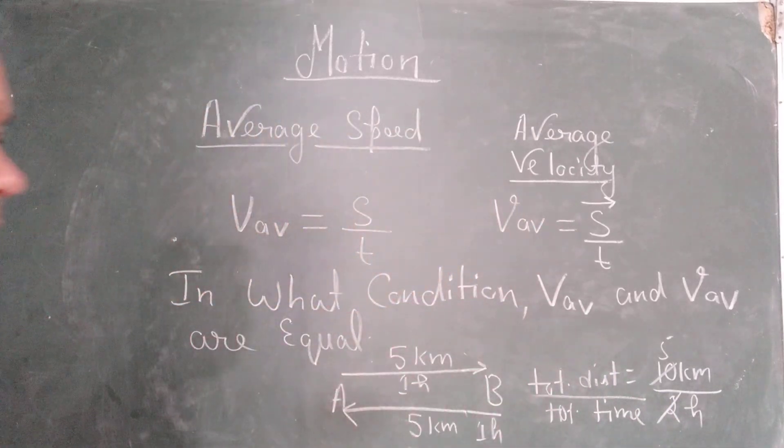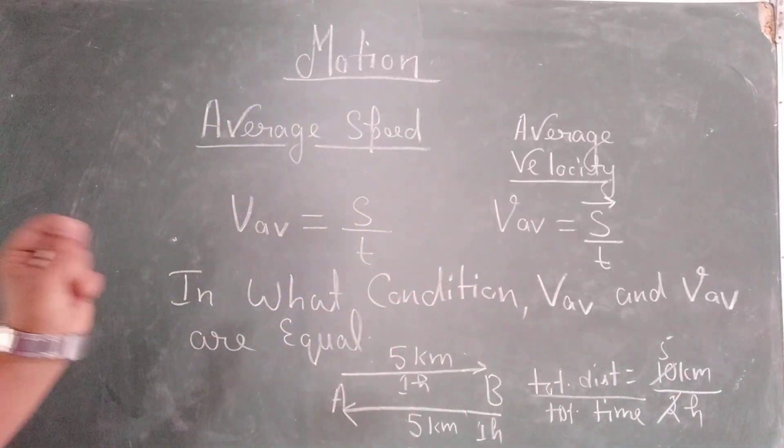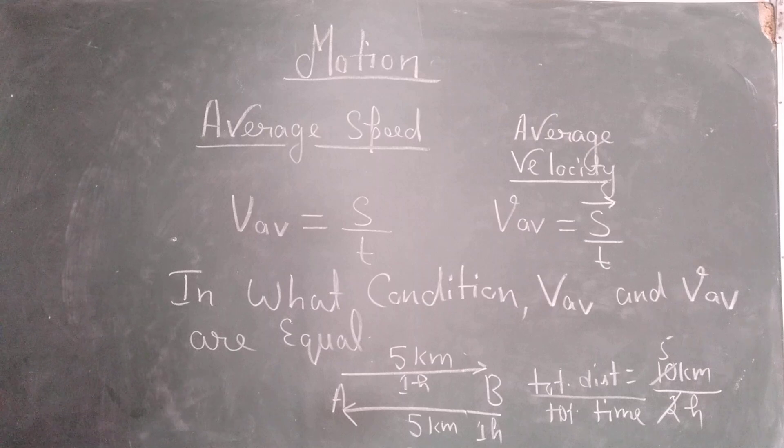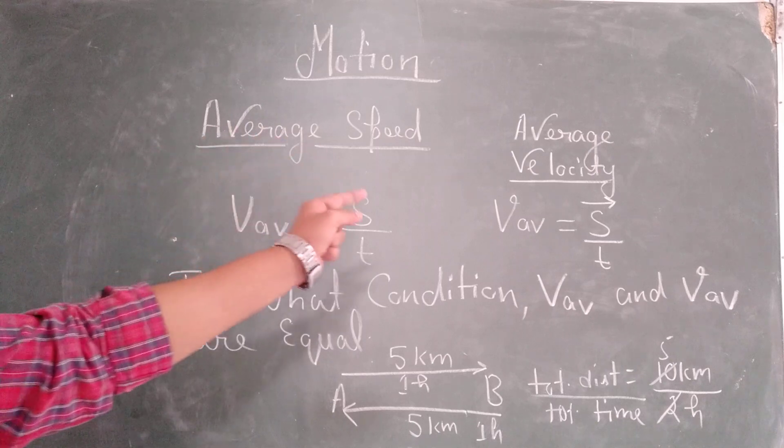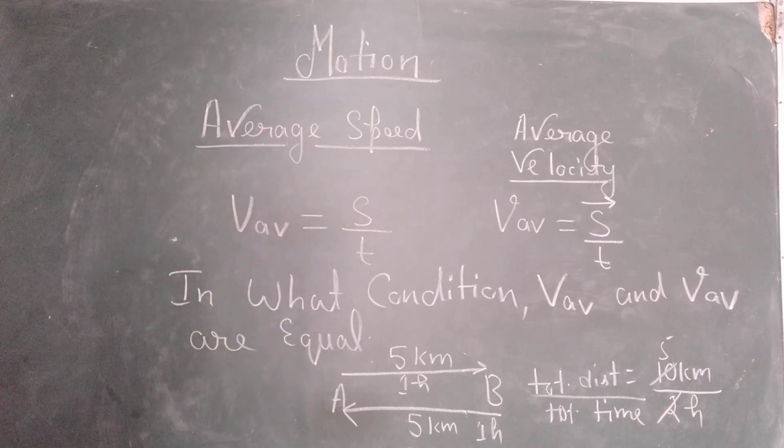So what have we done? We have divided total distance by total time and we have got the answer 5 km per hour. So in this case the average speed will be equal to 5 km per hour. But if you talk about average velocity, then going to the formula, average velocity is equal to displacement by time taken.